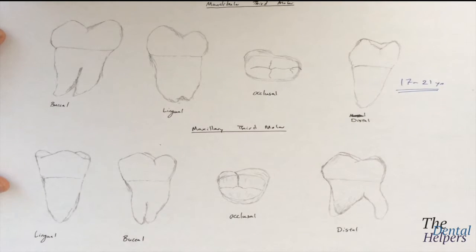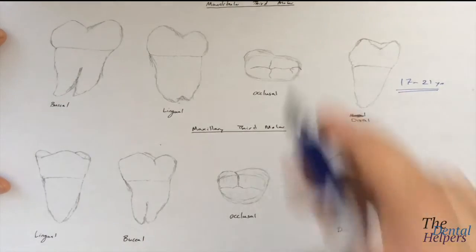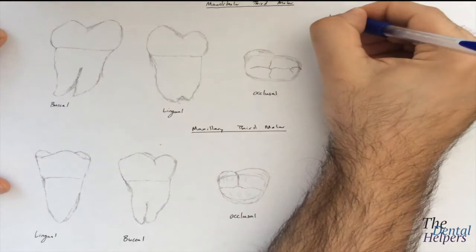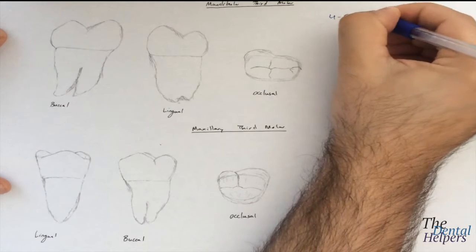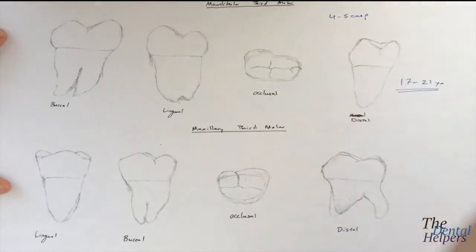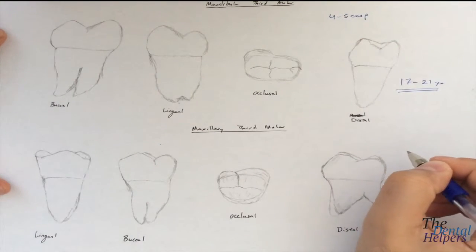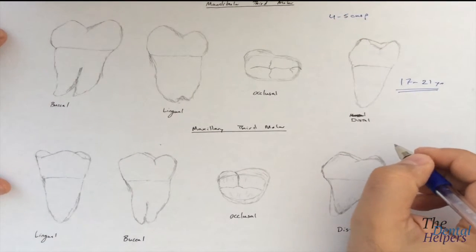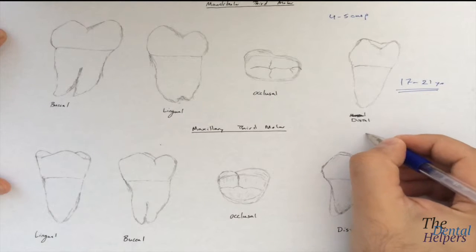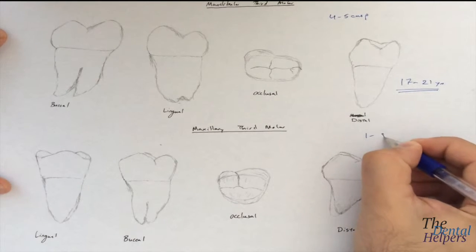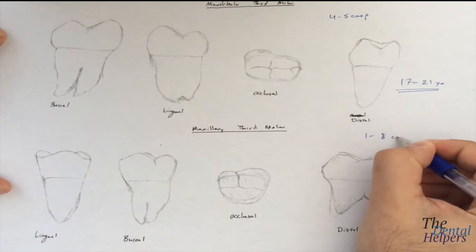The mandibular third molars typically have 4 to 5 cusps. What makes the maxillary third molars so unique is that they can have anywhere from 1 to 8 cusps.